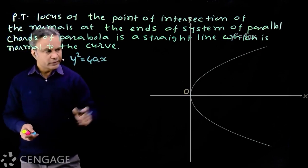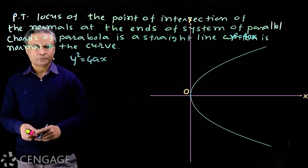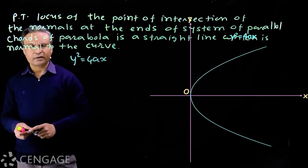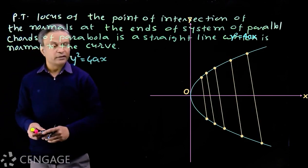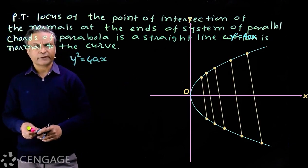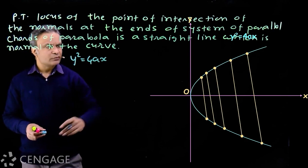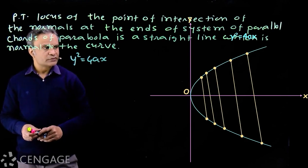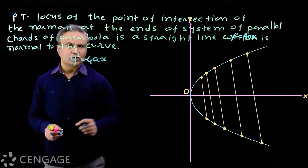Here we have the graph of the parabola. Now we have a system of parallel chords — suppose we choose this system of parallel chords. When we choose this system of parallel chords, we are actually fixing the slope of the chords.